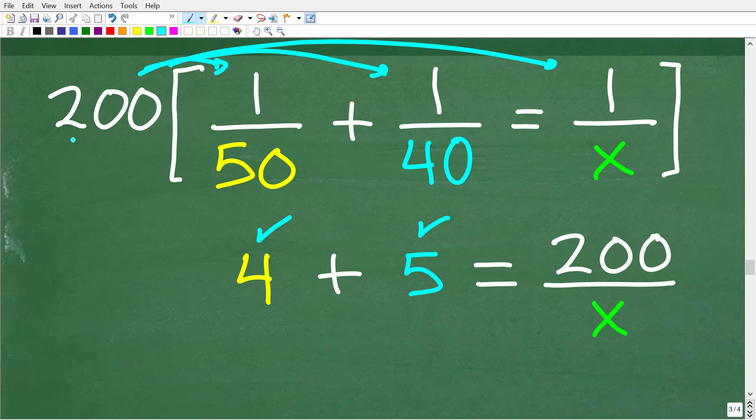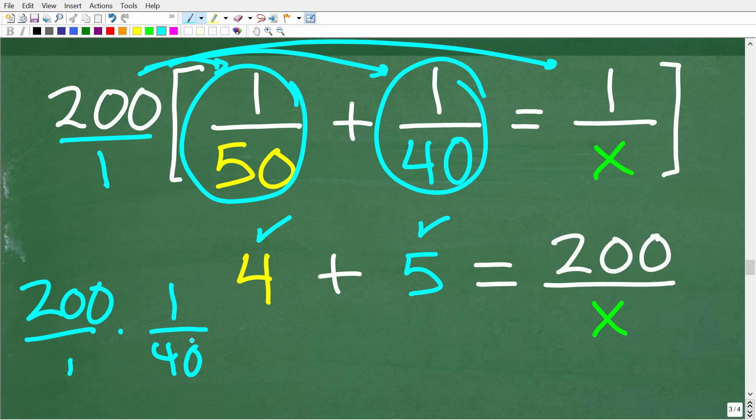So, just in case you're confused, what we're doing is taking 200 or 200 over 1 and multiplying by each term in the equation. So, 200 over 1 times 1 over 40 is what? Well, remember how you multiply fractions. You multiply the respective numerators and denominators. So, here you have 200 over 40 or 20 divided by 4, which, of course, is 5.